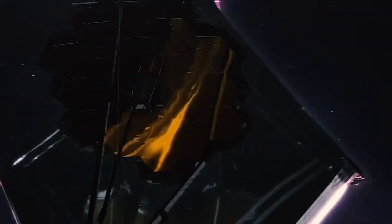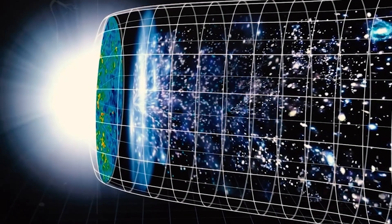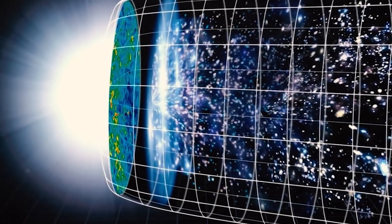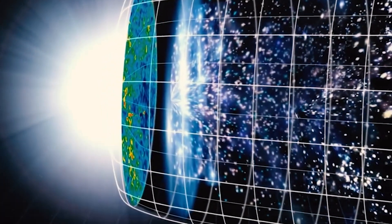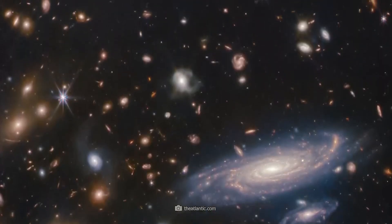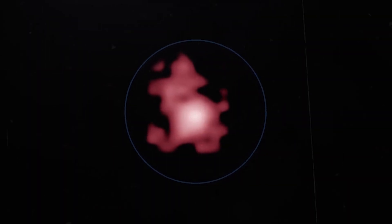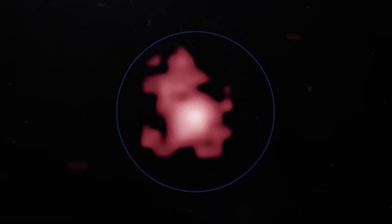NASA's James Webb Space Telescope has just seen the oldest black hole ever observed, dating from the very dawn of the universe, more than 13 billion years ago. In this video, we will explore this amazing discovery, which is located in the galaxy GNZ 11, the most distant and oldest galaxy known.